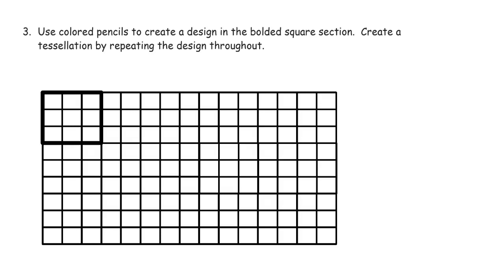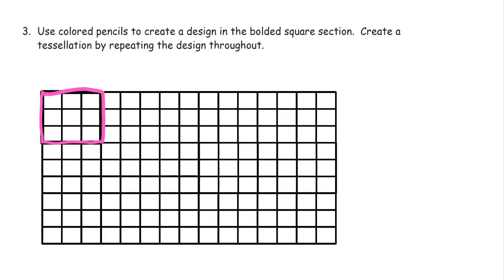Use colored pencils to create a design in the bolded square section, then create a tessellation by repeating the design throughout. So this is the bolded section here — I'm going to use pink and green. I'm going to do pink, pink, pink like that, and put green in the middle. That's your unit, and you're going to copy it again and again with every three-by-three section — that's what tessellation is about.